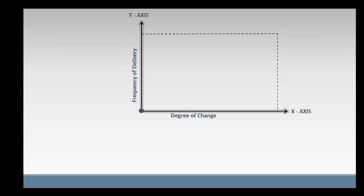Whether a project life cycle is predictive or adaptive depends on the degree of change and the frequency of delivery. As you can see from this graph, the degree of change increases along the X-axis while the frequency of delivery increases along the Y-axis.